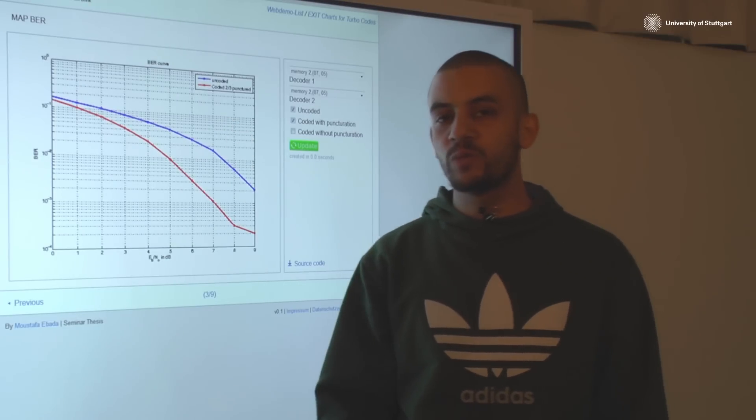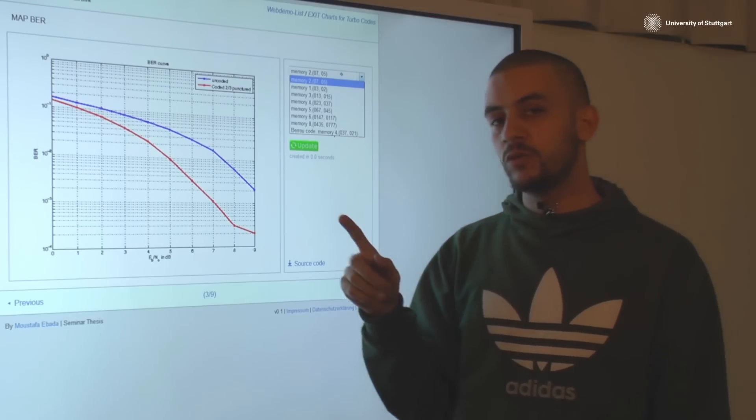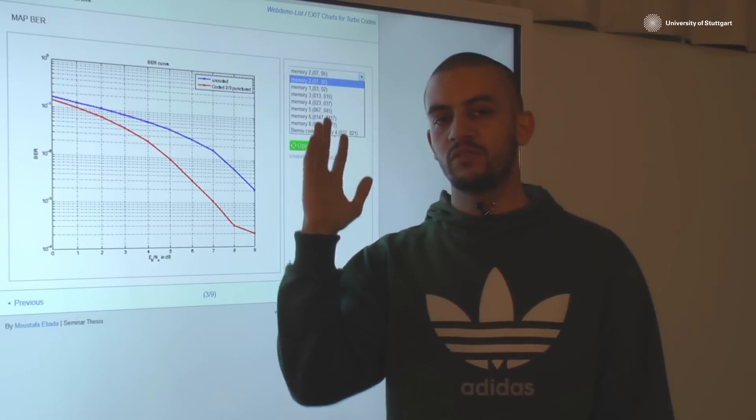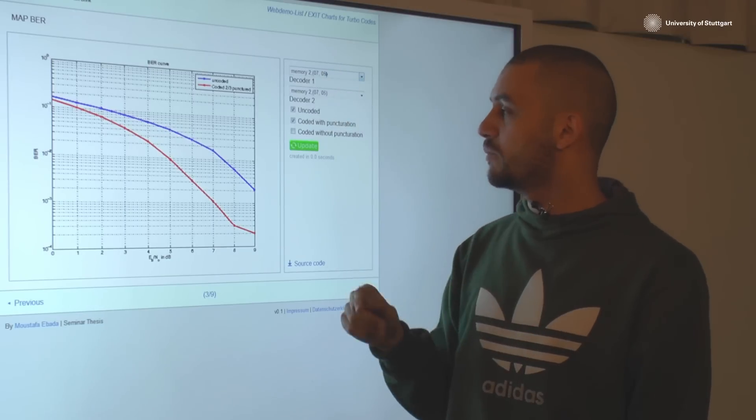It's about the bit error rate performance of our MAP decoder. Here you have the option to choose from our pull down menu, like you have memory 2, memory 1, memory 3 elements. We have a very famous code, the Bureau code, so I will just start by the normal memory 2 elements.